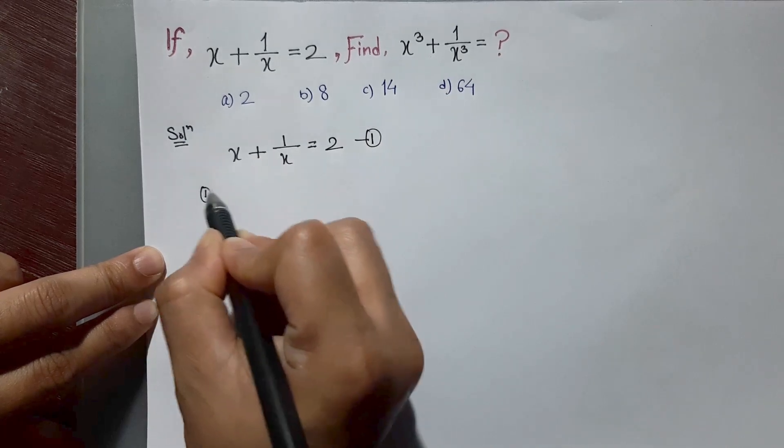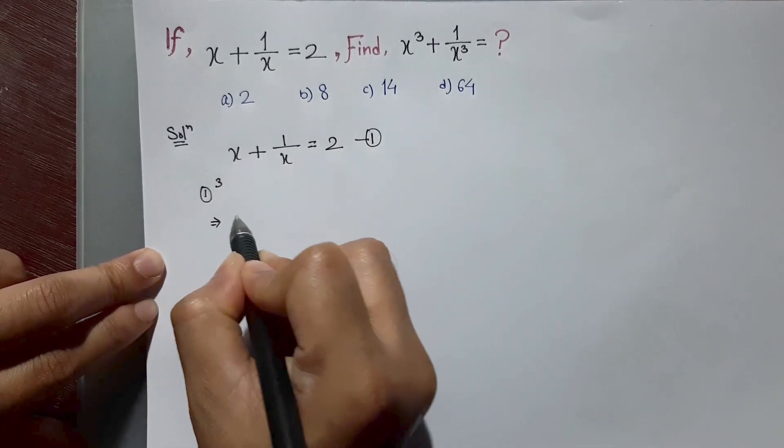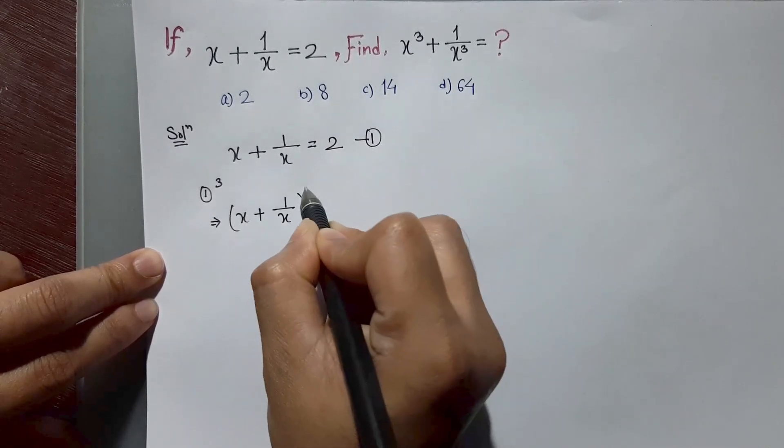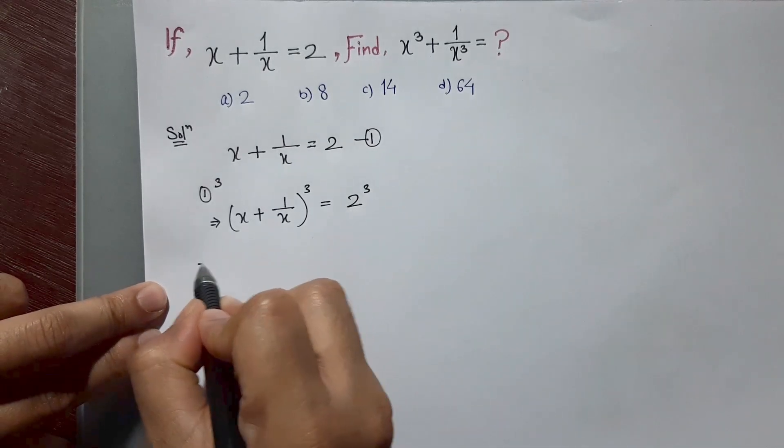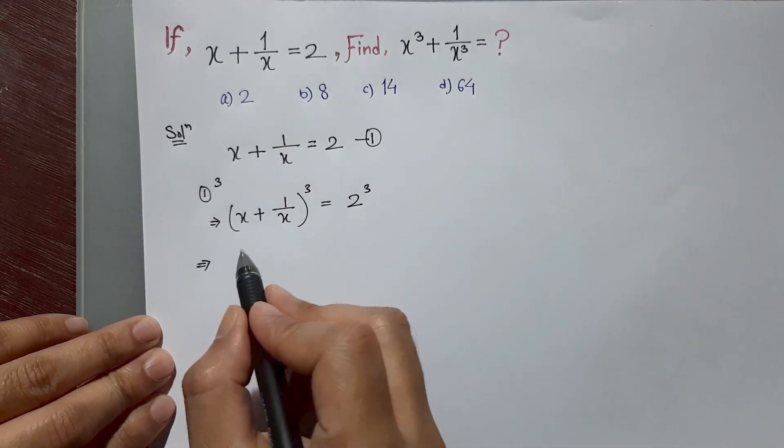It will become x plus 1 by x whole cube is equal to 2 cube. So now we have to apply a plus b whole cube formula.